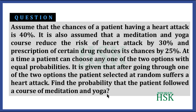It is given that after going through one of the two options, the patient selected at random suffers a heart attack. Find the probability that the patient followed a course of meditation and yoga. So there is a 40% chance of a heart attack. If the patient takes a yoga course, the risk is reduced by 30%, and taking a certain drug reduces the risk by 25%. The patient can choose only one of the two options, and after going through one option, the patient suffered a heart attack.